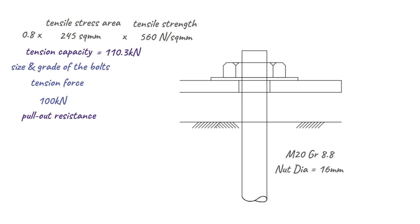Now let's move on to pull-out resistance. Even if the bolts can withstand the expected tension forces, they won't be able to hold down the structure if the concrete they are anchored in is not strong enough.